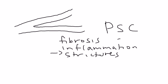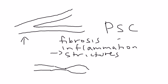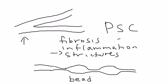In PSC, you have a bile duct that's healthy, but then strictures form, followed by dilatations, then another stricture, then another dilatation, and so on. This appearance is known as 'beading,' and it can lead to obstruction.